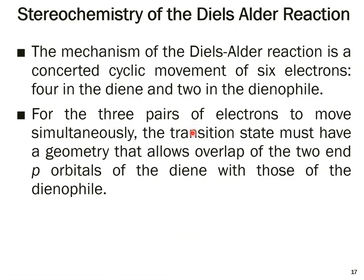Next we move on to the stereochemistry of the Diels-Alder reaction. The mechanism involves a concerted cyclic movement of six pi electrons — four in the diene and two in the dienophile. For these three pairs of electrons to move simultaneously, the transition state must have a geometry that allows overlap of the two end p orbitals of the diene with those of the dienophile.